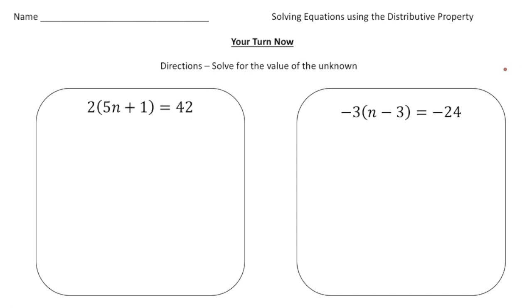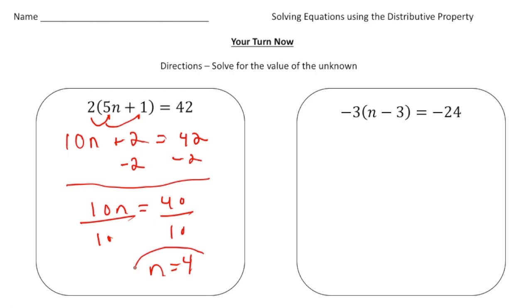Welcome back. Let's see how you did with these practice problems. So the first problem, it's two groups of five n plus one equals 42. So I'm going to first distribute the two to both the five n and the one. So I'll give us 10 n plus two equals 42. Now I'm going to take away two from both sides. And we get 10 n equals 40. And then divide both sides by 10. And n equals four. So there's the first solution.